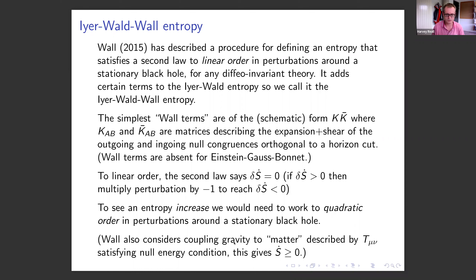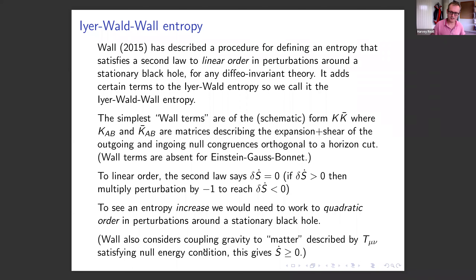As a footnote, Wall also considered coupling gravity to matter described by an energy-momentum tensor satisfying the null energy condition, which does give a genuine entropy increase, but that increase comes purely from matter, not from gravitational waves. It also treats matter and gravitational fields asymmetrically, and in theories with higher derivatives there is typically no clean division of the Lagrangian into gravity and matter parts, and no reason the null energy condition would be satisfied.